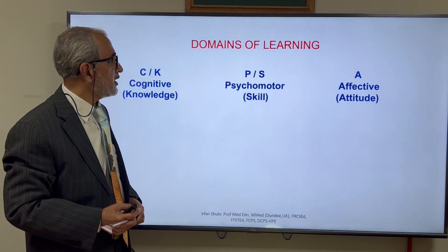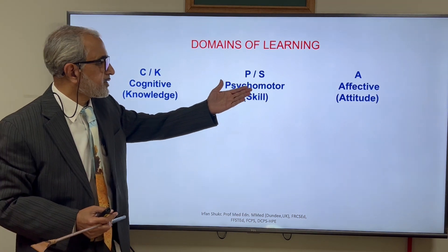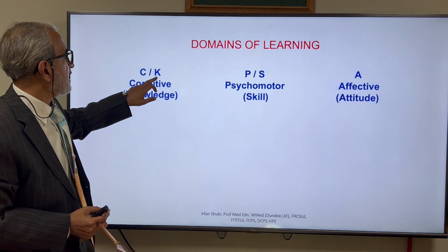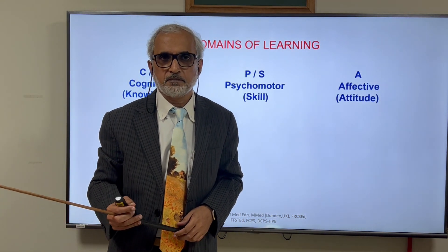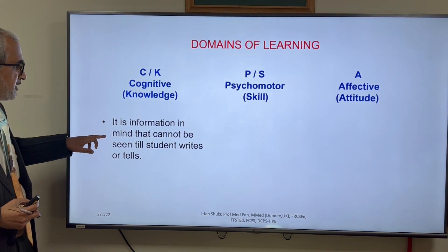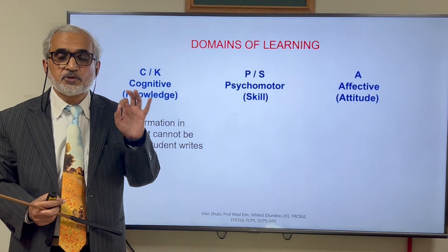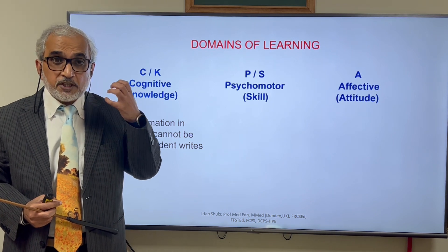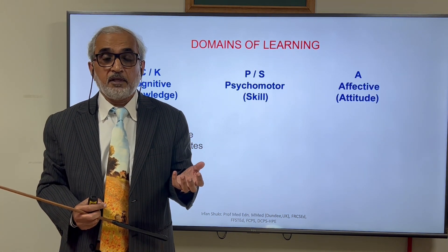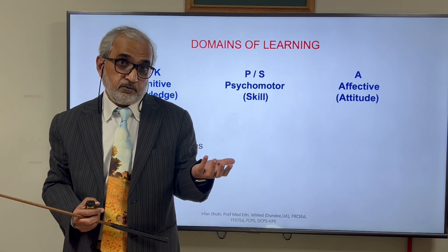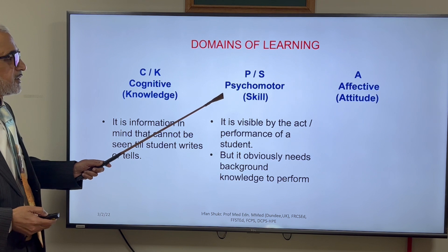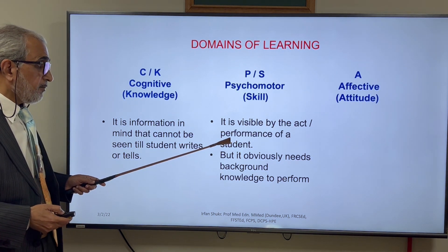When we talk about domains of learning, we say cognitive, psychomotor, and affective — or knowledge, skill, and attitude — or CPA or KSA in short form. The knowledge or cognitive domain of learning is information in the mind, and one cannot see into the mind. To know whether a student has this domain of learning, he has to express it by means of a performance — oral, written, or anything else. Psychomotor skill is visible by the act or performance of a student.